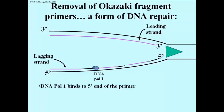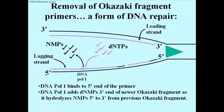While replication continues at the replication fork, DNA polymerase 1 binds to the 5' end of Okazaki fragments — that is, to their RNA primer end. DNA polymerase 1 then removes each RNA nucleotide, shown as a black checkmark, and replaces it with a deoxynucleotide, shown as pink or lavender checkmarks, from the pool of deoxynucleotide triphosphates.